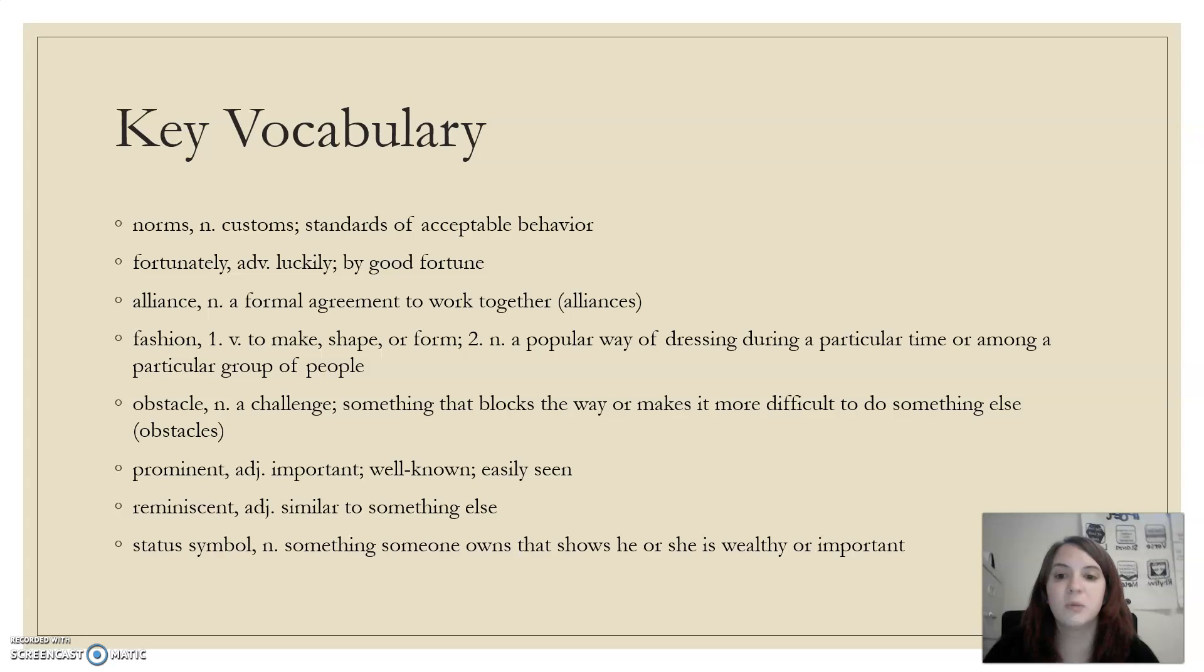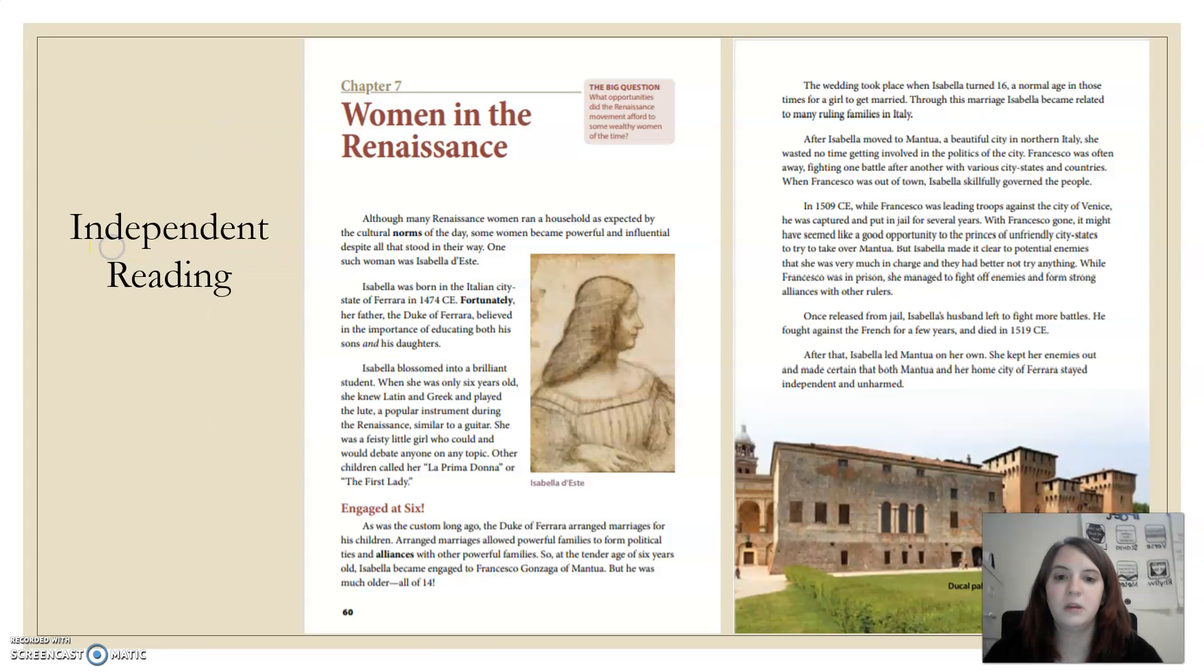Obstacle, a challenge, something that blocks the way or makes it more difficult to do something else. Prominent is important, well-known, easily seen. Reminiscent is similar to something else, and status symbol is something someone owns that shows he or she's wealthy or important. Okay, you're going to go ahead and read independently.